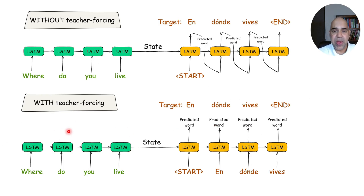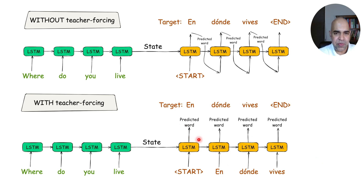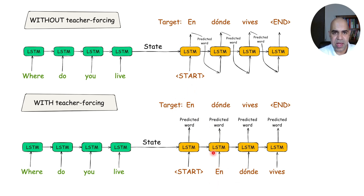The decoder is generally trained in a manner known as teacher forcing. This means that at each time step the decoder is fed the correct output from the previous time step to help it predict the next token well. In the previous time step the predicted word can be incorrect — whatever the predicted word is, it helps compute the loss for that part of the prediction, but we don't want the incorrect prediction to propagate in the upcoming iterations. That is why a teacher forces the expected target of the previous time step to become the input of the next time step, instead of directly using the predicted word.